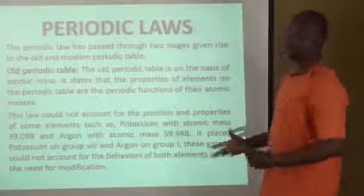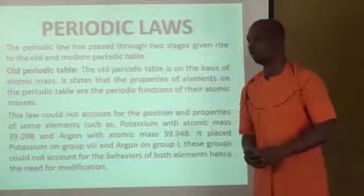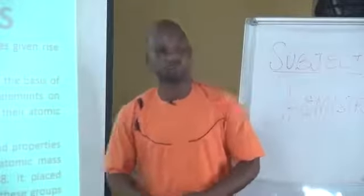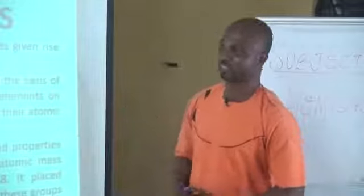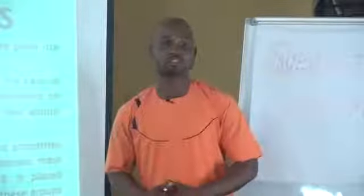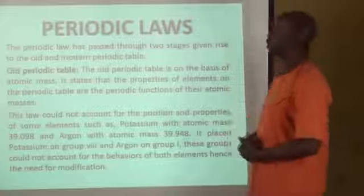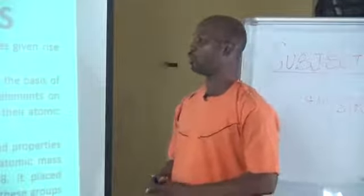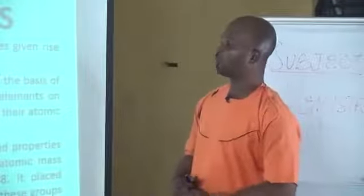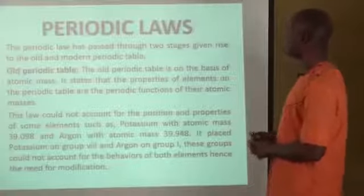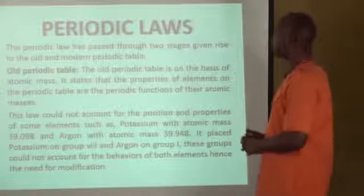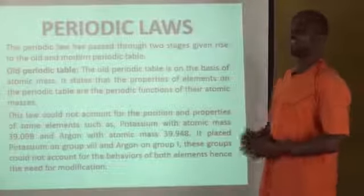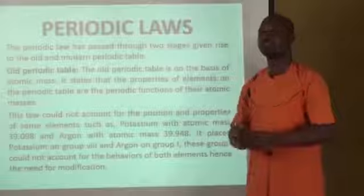Now we are going to look at the periodic laws. Before we arrive at the final periodic law, there were other periodic laws that came before. Because of their irregularity and inconsistency and anomalies, these laws were further modified. The first law was based on atomic mass, referred to as the old periodic law. The old periodic law states that the properties of elements on the periodic table are the periodic function of their atomic masses, meaning elements were arranged in order of their increasing atomic masses.